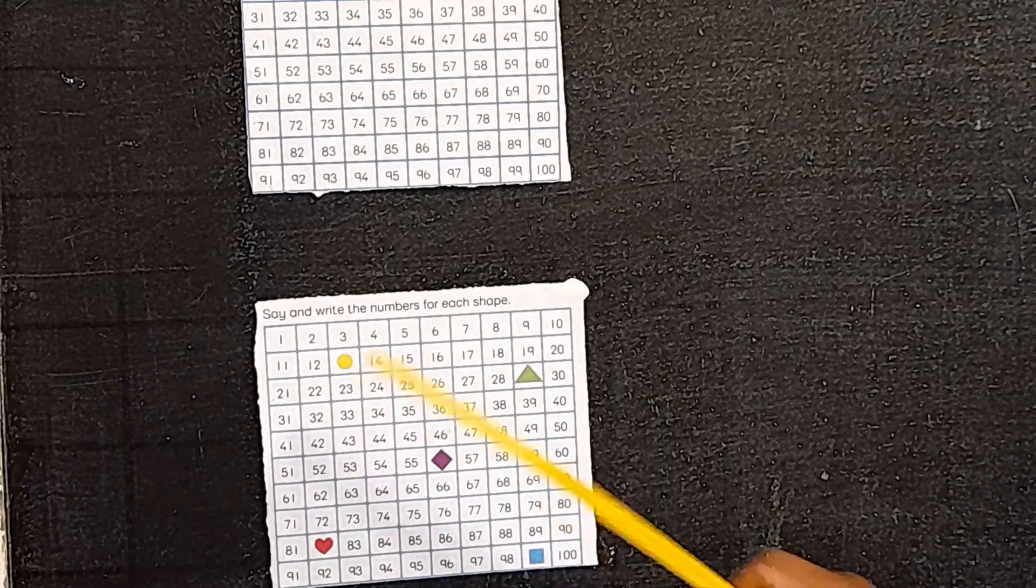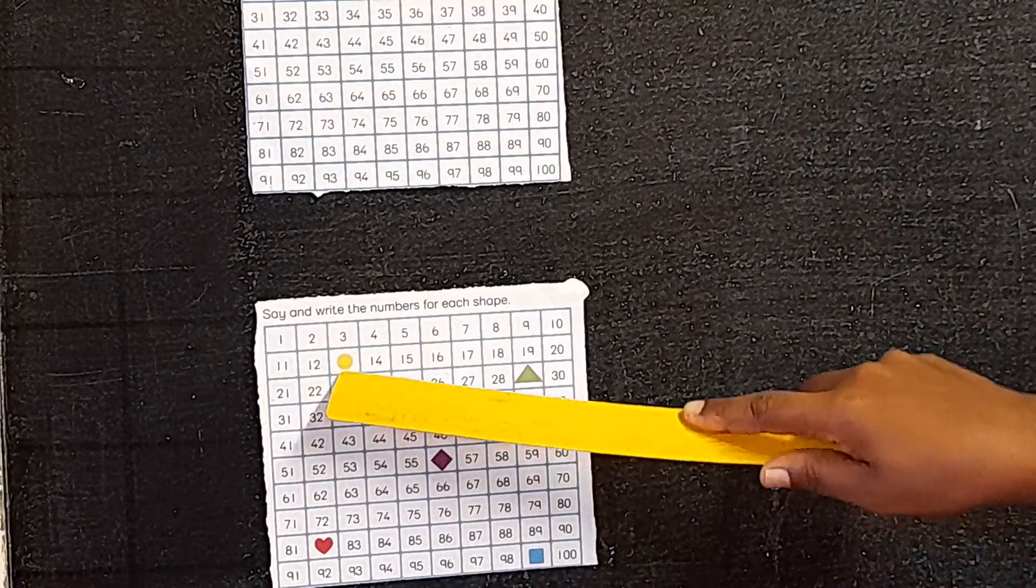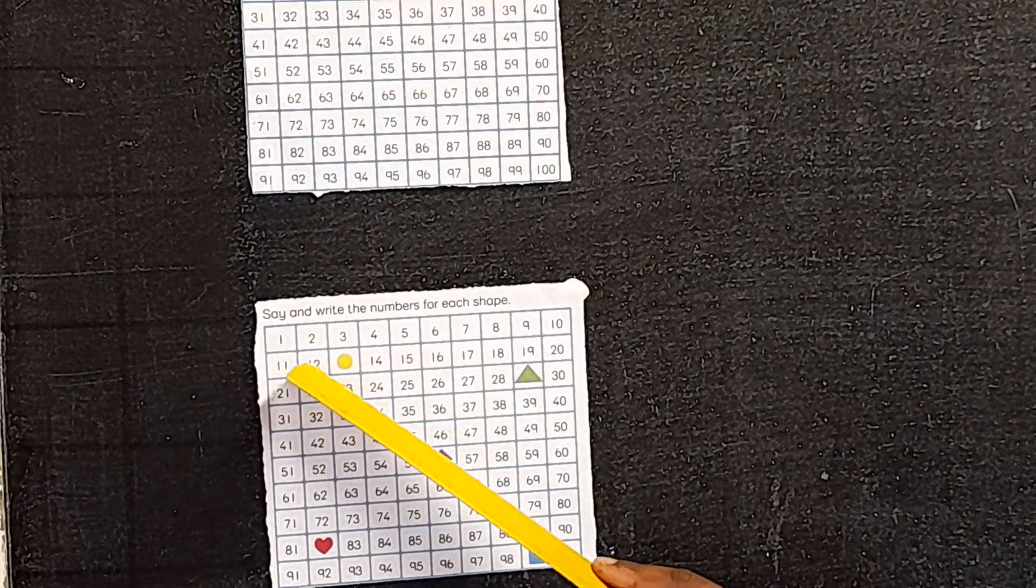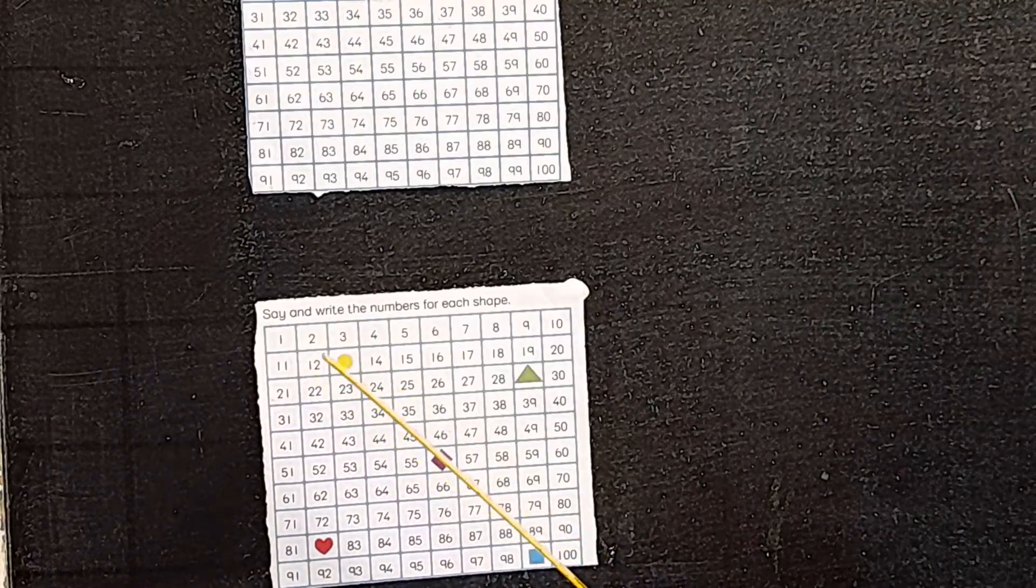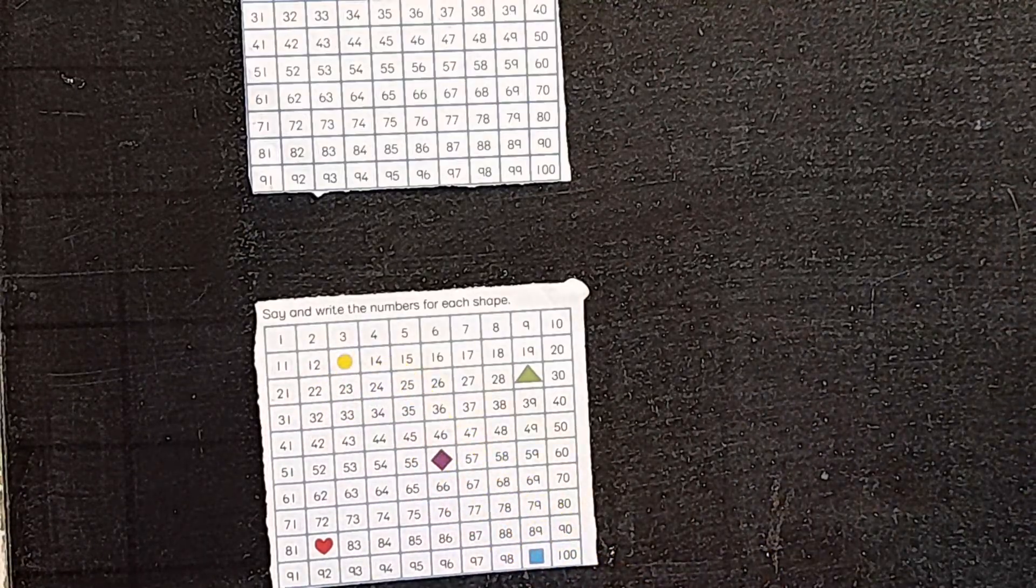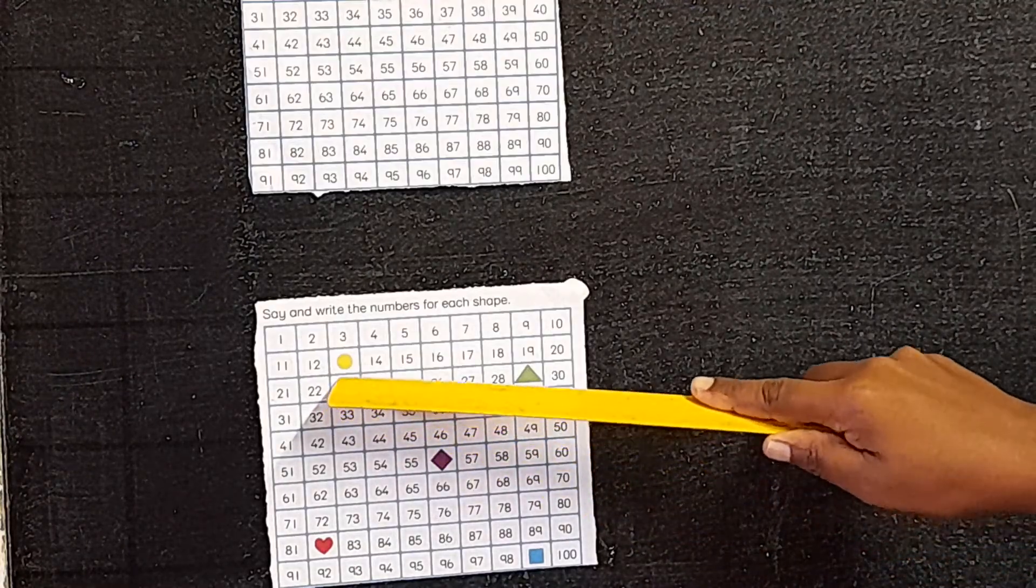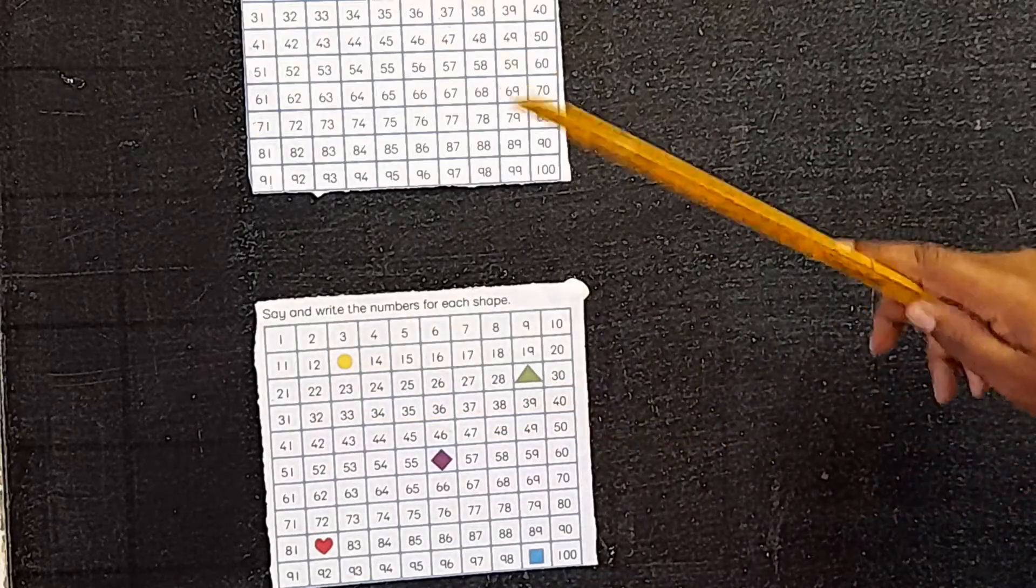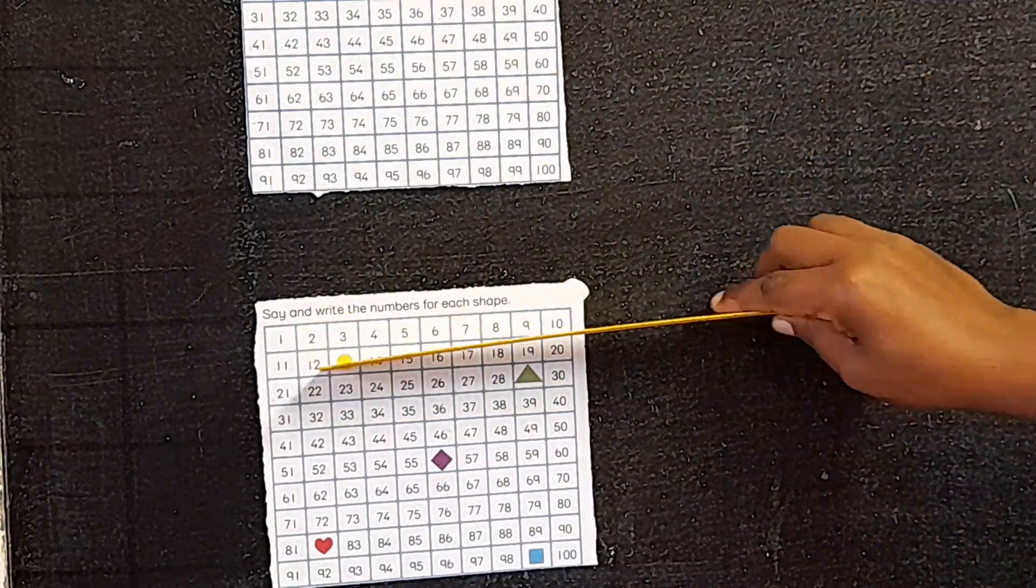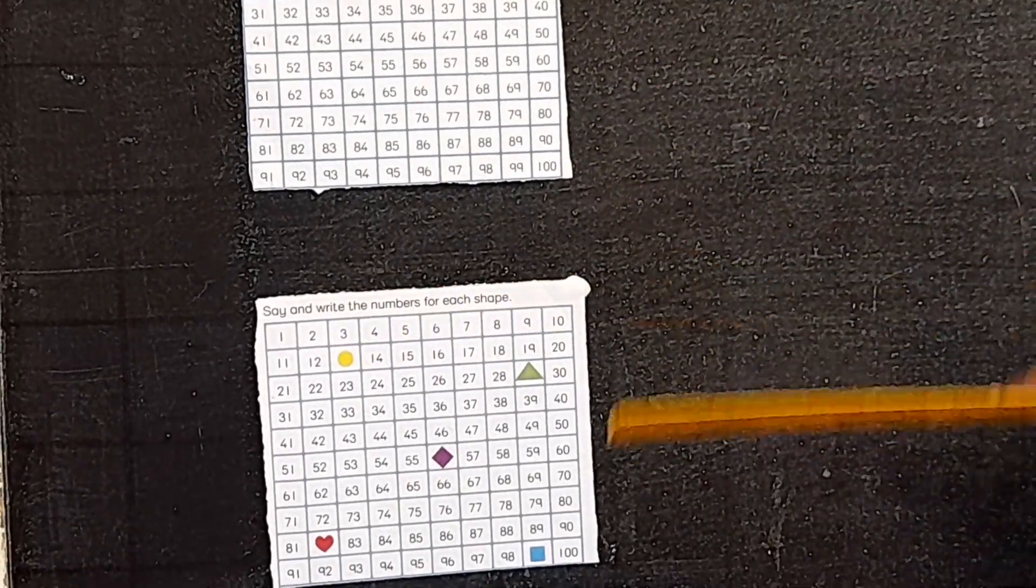Maybe for this one let the teacher help you. The number that is supposed to be here, we say 11, 12, then 13, 14. So definitely the number that is supposed to be here is 13. It is very easy as long as you're going to count. You start from one and move on, and you'll be able to get to the answers.